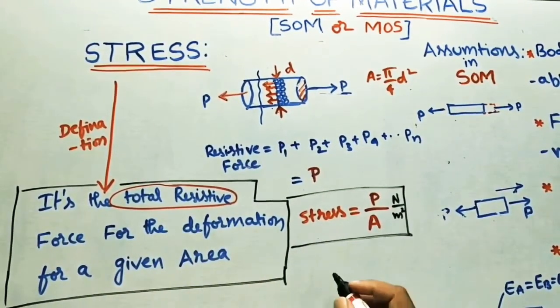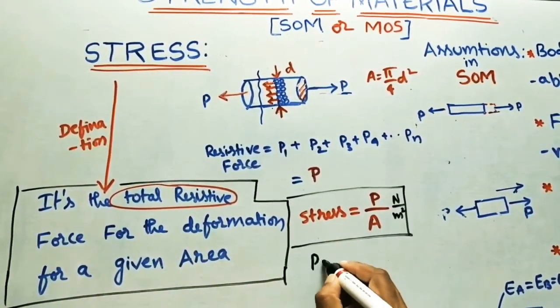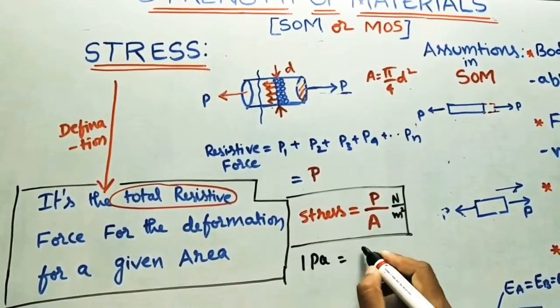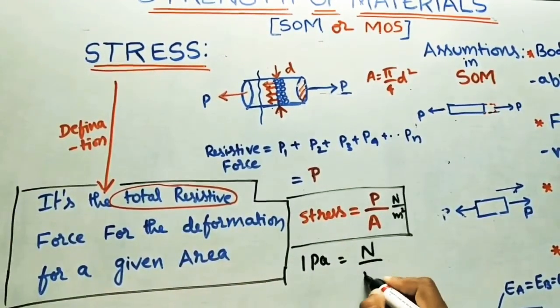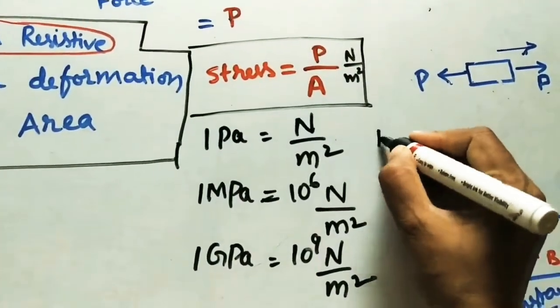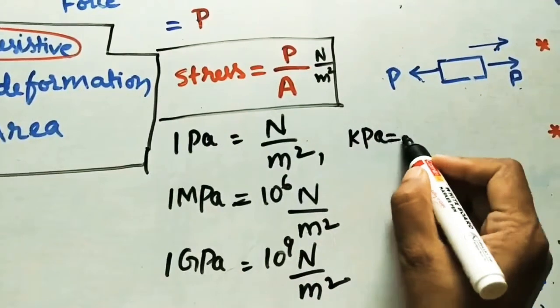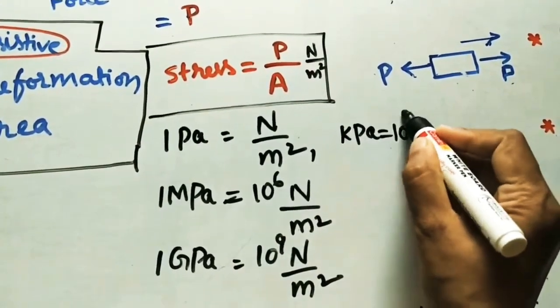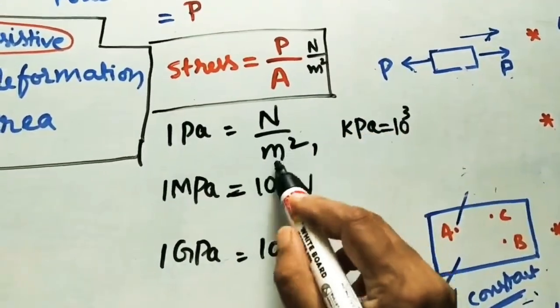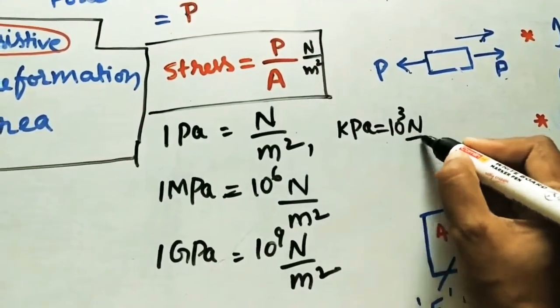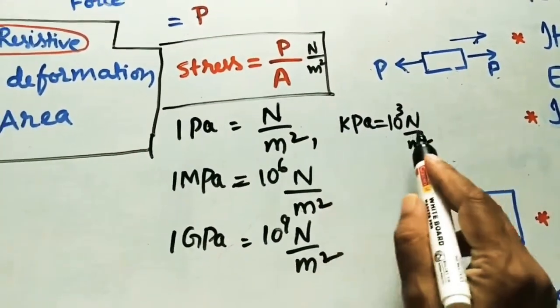Sometimes they are giving in terms of Pascal. 1 Pascal is equal to 1 Newton by meter square. Sometimes they are giving kilopascal. Kilo is 10 cube. Pascal means Newton per meter square. It is kilopascal.